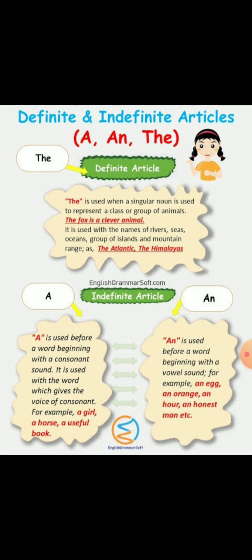Indefinite article a. A is used before a word beginning with a consonant sound. It is used with words which give the voice of consonants. For example: a girl, a horse, a useful book.